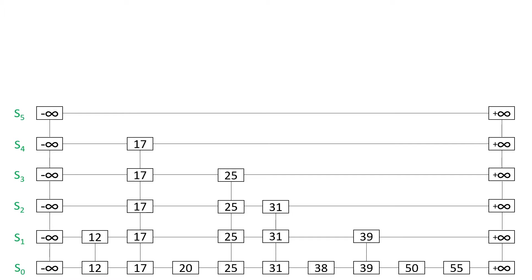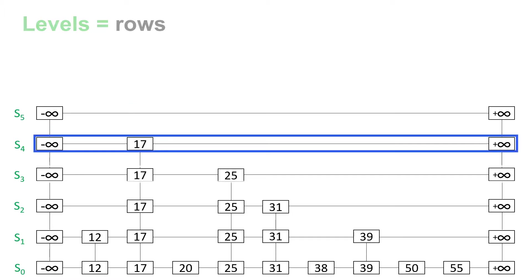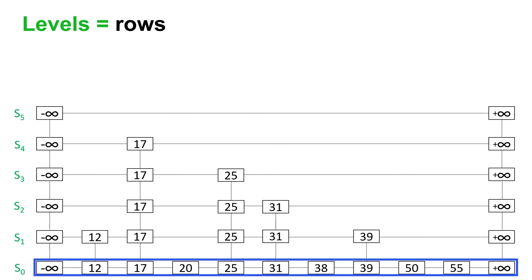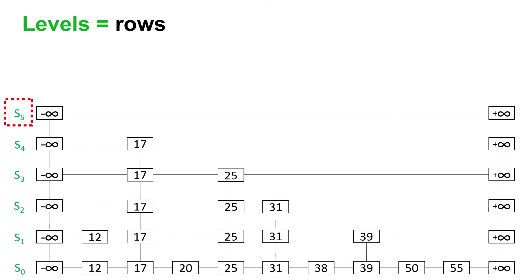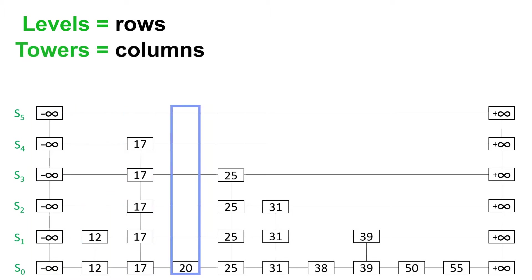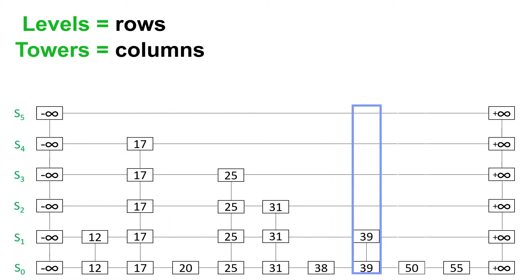A row of data is called a level, and the highest level determines the height of the skip list. The height here is 5 because the highest level is S-sub-5. The bottom level is S-sub-0. The negative infinity and positive infinity nodes are called sentinel nodes, and they never change. Every column is called a tower. Every tower holds the same key, and we'll discuss that in the video explaining insertion and deletion.